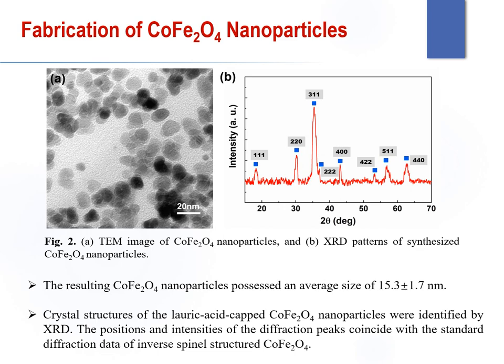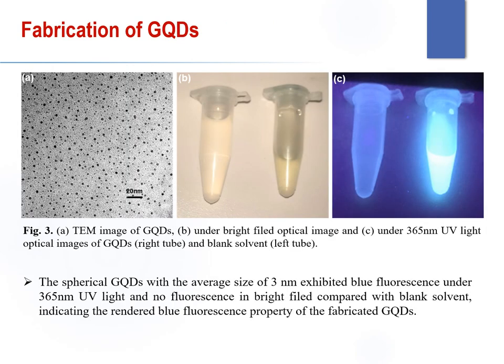The morphology of cobalt silica nanoparticles was studied using TEM. The resulting cobalt nanoparticles possess an average size of 50.3 nanometers, as shown in Figure 2A. The crystal structure of the cobalt nanoparticles was identified by XRD. The position and intensities of the diffraction peaks coincide with the standard diffraction data of the inverse spinel structure cobalt nanoparticles.